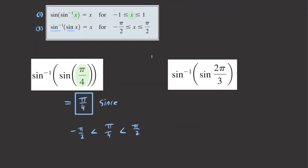Now for the next example, we want to find sine inverse of sine of 2 pi over 3. We have to check whether this angle is within the restricted domain for sine, which is negative pi over 2 to pi over 2. Since 2 pi over 3 is not within this boundary, we need to find its reference angle so we can replace it and then apply the cancellation property.